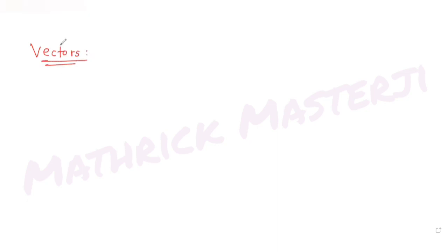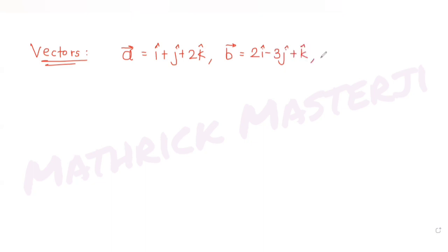Today's question is from the topic of vectors. We are given three vectors: vector a = î + ĵ + 2k̂, vector b = 2î - 3ĵ + k̂, and vector c = î - ĵ + k̂.